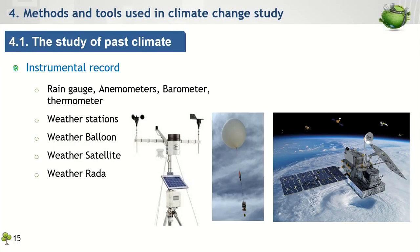The instrumental record uses modern equipment such as weather stations, weather balloons, radar, and satellites to record atmospheric parameters such as temperature, precipitation, wind velocity, and air pressure. This method normally provides more accurate data than the other two methods; however, it is only available in recent decades, after the boom of information technology.